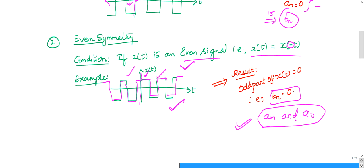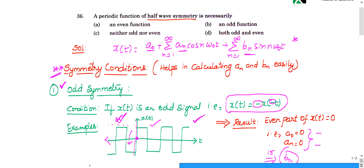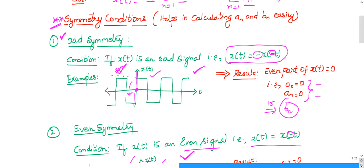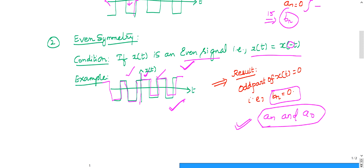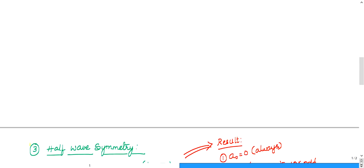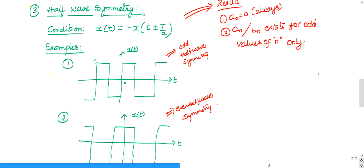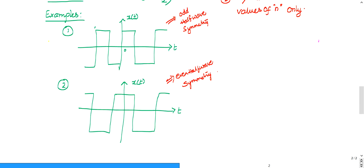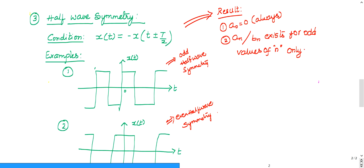Now let us discuss what is given in the question — half wave symmetry. The condition is: x(t) = −x(t ± T/2). Do not get confused by seeing this condition; it is very simple. I will explain it with an example.